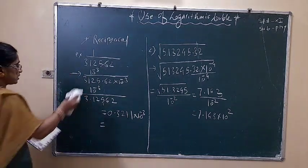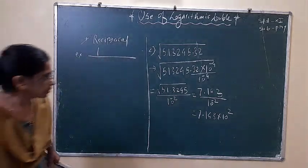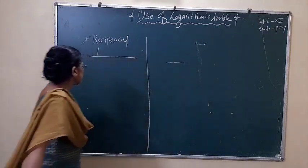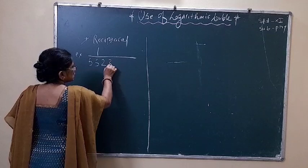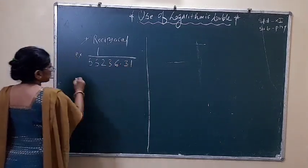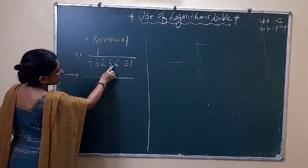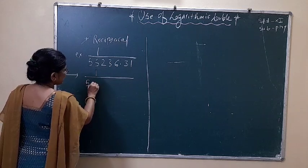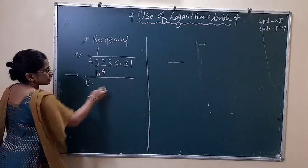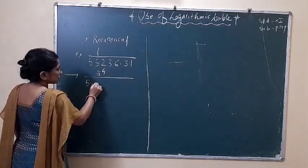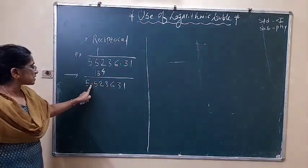Next example: reciprocal of one upon 5523.631. Address this number in one digit. For it, we have to multiply it by 10 raised to minus 4 to the denominator: 5, directly, 10 raised to minus 4, 1, 2, 3, 4. Multiply it by 10 raised to minus 4 and divide it by 10 raised to minus 4. By adjusting 10 raised to minus 4, we get 2, 3, 6, 3, 5. Then it is adjusted by a decimal point for it.